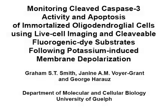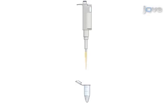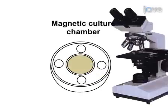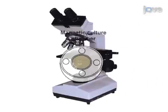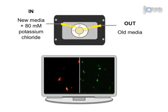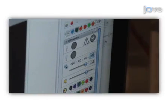This procedure allows oligodendroglial cell death to be monitored in real time. This is accomplished by first culturing the cells. Then the cells are prepared for live cell imaging. The next step is to provide a treatment to the cells and monitor the effects using fluorescence microscopy. The final step is to perform data analysis.